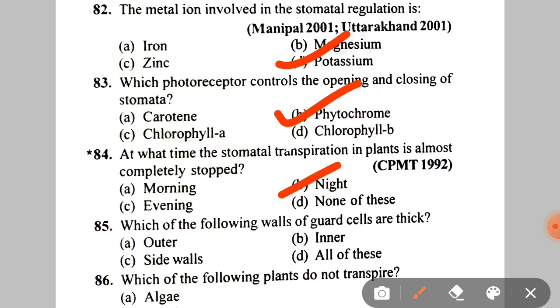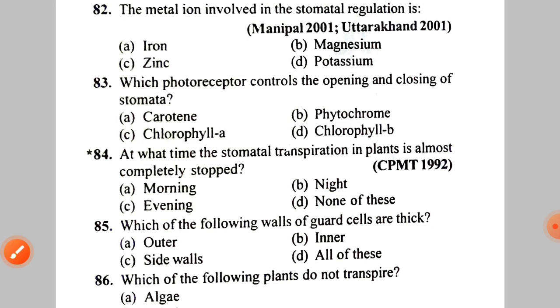Next: which walls of guard cells are thick? A. Outer, B. Inner, C. Side walls, D. All of these. The correct answer is B — the inner walls are thick.